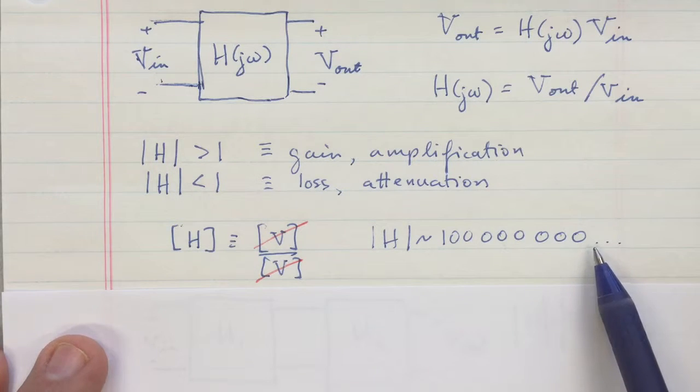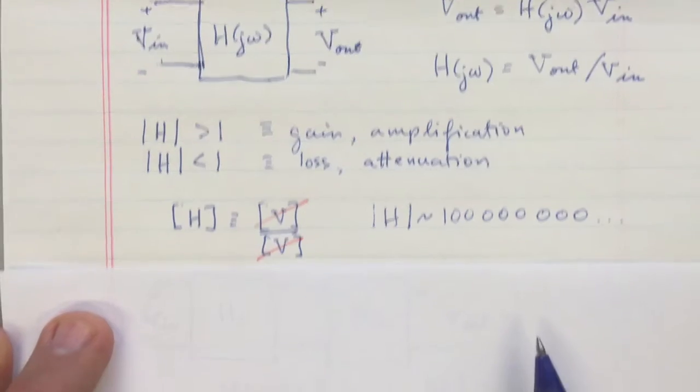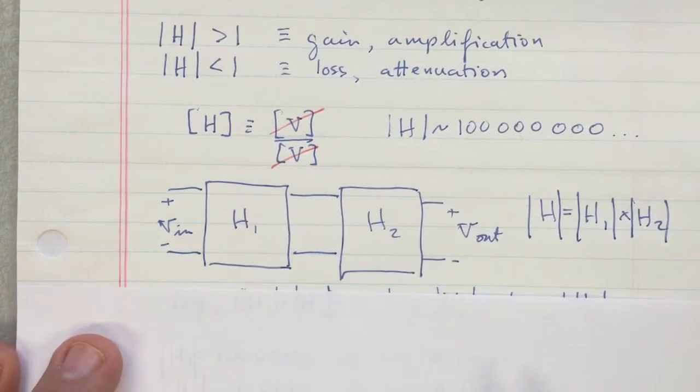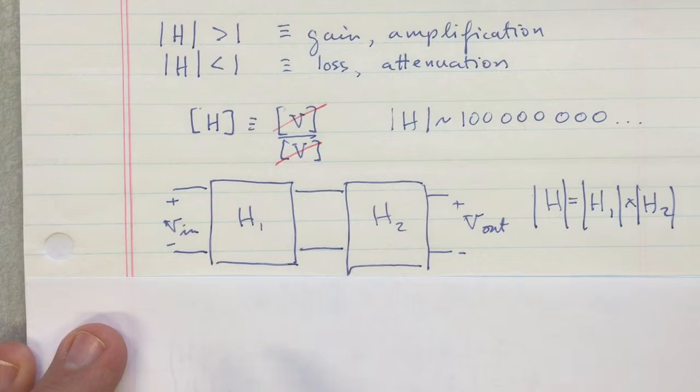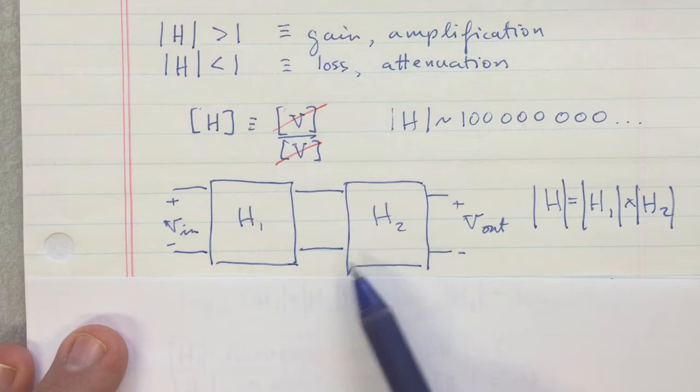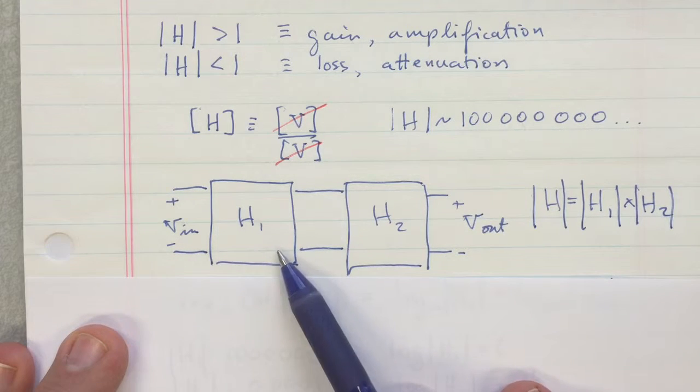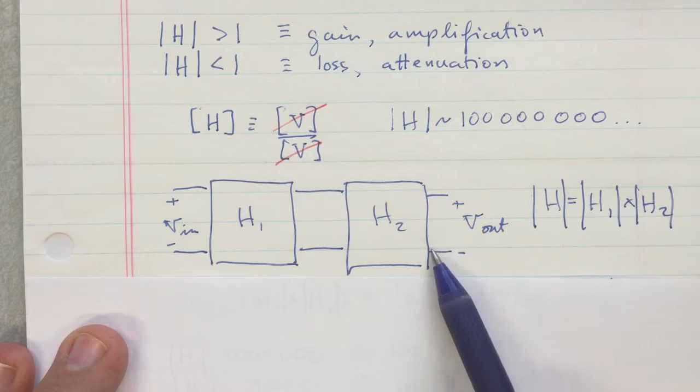And keeping track of all those zeros is kind of frustrating. So the third problem is that when you have two transfer functions together—say a system, you go into one system, out of it, and then into another system—